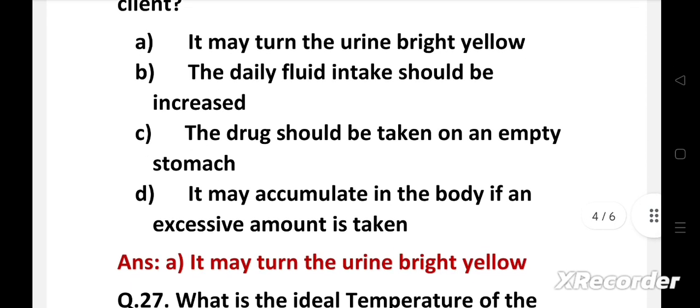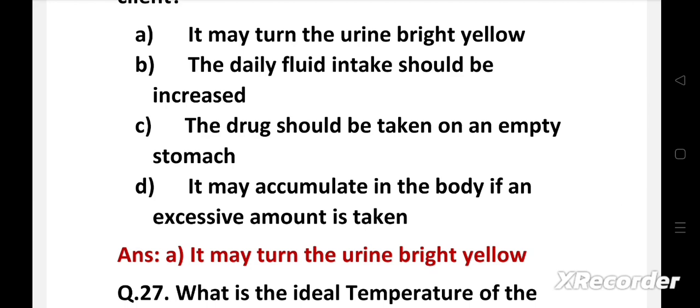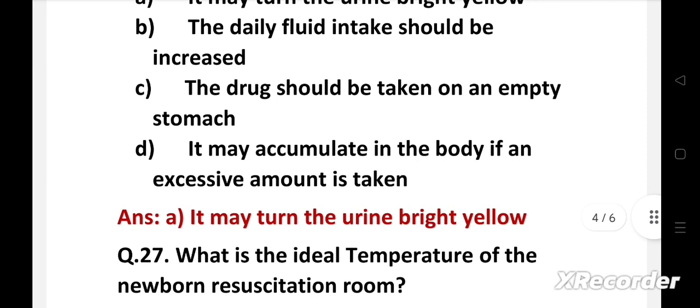Right answer is A, it may turn the urine bright yellow. Bright yellow urine is an expected insignificant side effect of vitamin B complex. There is no need to increase oral fluids; the client may consume the usual daily intake of fluid. When vitamin B complex tablet is taken on empty stomach it may precipitate nausea, therefore it should be taken with food. Vitamin B complex is a water-soluble vitamin and excess amounts are excreted in urine.